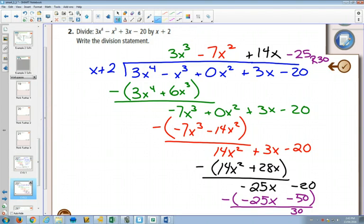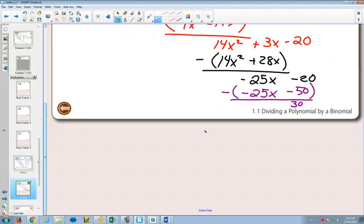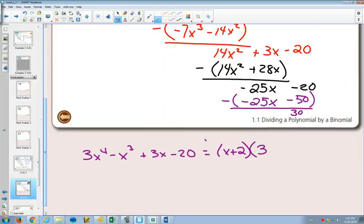The last thing we need to do is write our division statement. The polynomial that we started with was 3x to the 4 minus x cubed plus 3x minus 20. When you're writing the division statement, you don't need to add that 0 in there. It's not wrong if you do. Divided by x plus 2 equals we got, as an answer, 3x cubed minus 7x squared plus 14x minus 25, and then our remainder was 30.